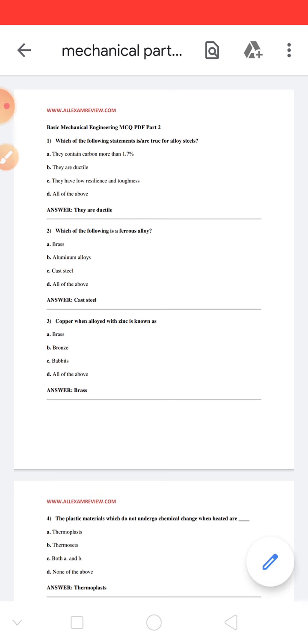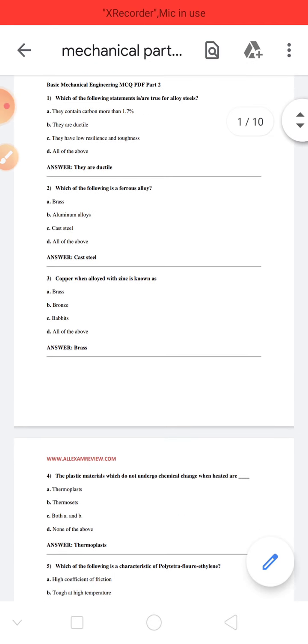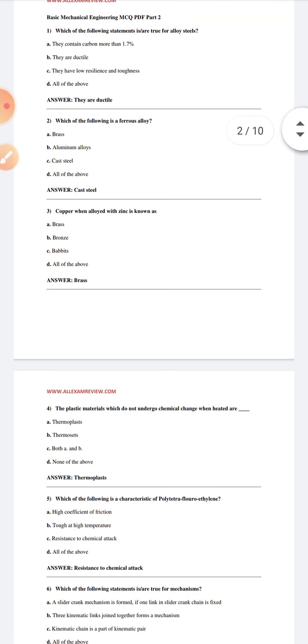Which of the following statement is true for alloy steels? They are ductile. Which of the following is a ferrous alloy? Cast steel. Copper when alloyed with zinc is known as brass. Plastic materials which do not undergo chemical changes when heated are thermoplasts.